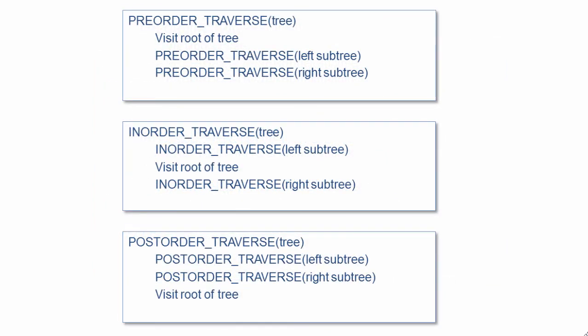Here are algorithms for pre-order, in-order, and post-order traversal next to each other. They're very similar — the only difference is when we visit the root. With pre-order, we visit the root first. With in-order, we explore the left subtree, then visit the root, then explore the right subtree. With post-order, we explore the left subtree, then the right subtree, and then finally the root.